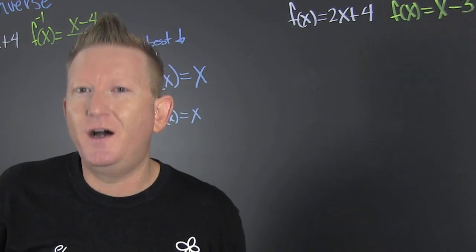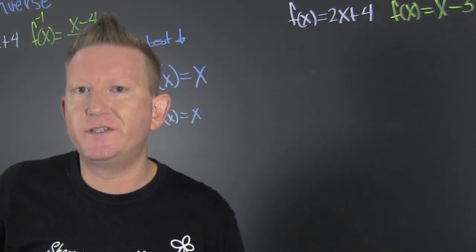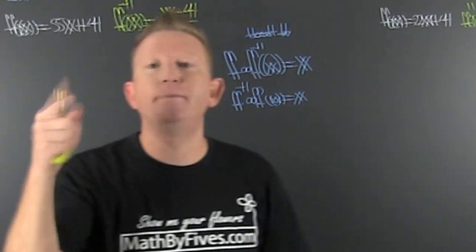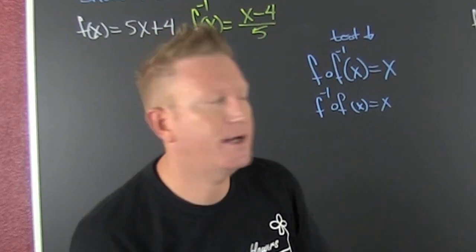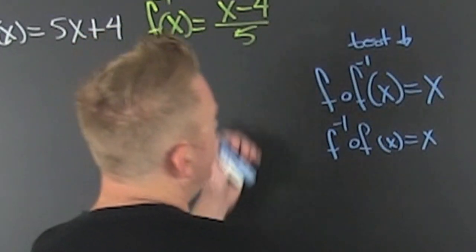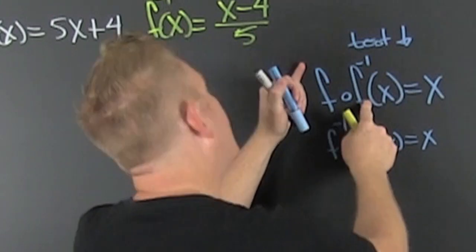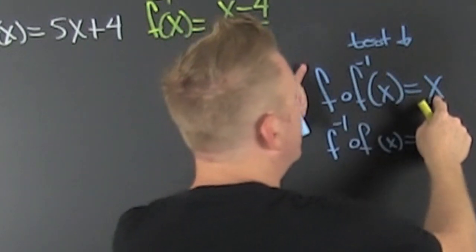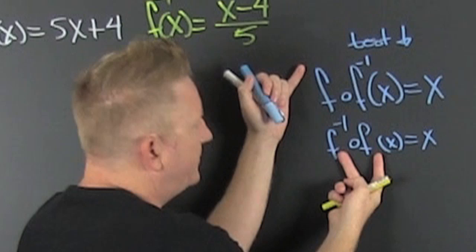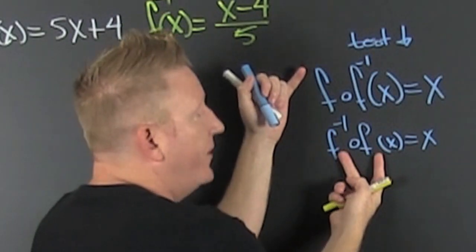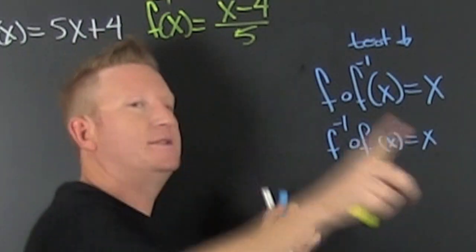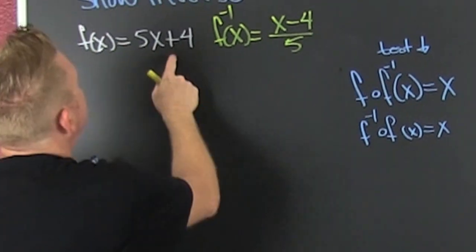Using composition to show a function is the inverse of another function. A function is an inverse if when you compose it with the inverse you get out the argument. Similarly, the inverse composed with the function gets out the argument.